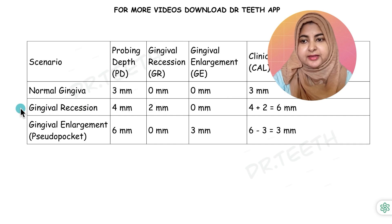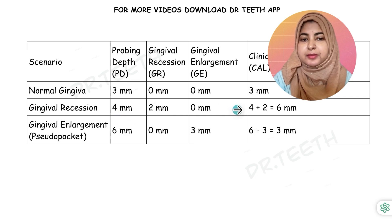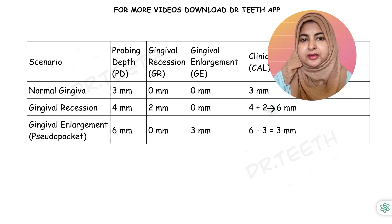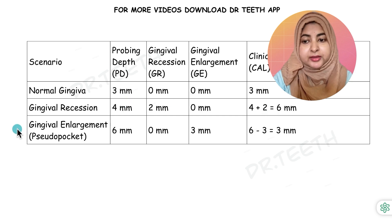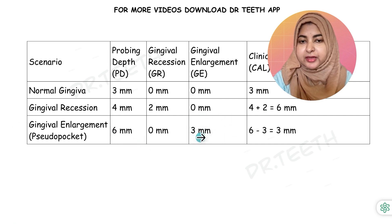In the second case, we have gingival recession of 2 mm and the probing depth was 4 mm. You simply add them together — 6 mm will be your clinical attachment level. In the third case, where we have gingival enlargement or a pseudo pocket, let's suppose 3 mm as the gingival enlargement.